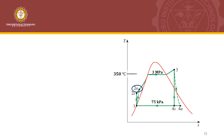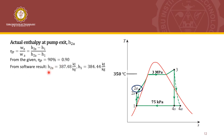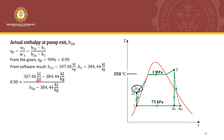Since this is an actual Rankine Cycle, we need the actual enthalpy at the pump exit, which is H2A. We use the relationship between H2S and H2A based on the isentropic pump efficiency of 90% or 0.9. From the software, H2S is 387.48 kJ per kg and H1 is 384.44 kJ per kg. Plugging those values into the formula and solving for H2A, we get H2A as 387.8177 kJ per kg. This is greater than the ideal H2S of 387.48, as expected.